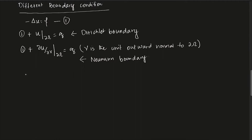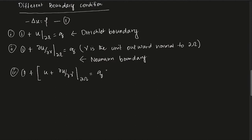There are other boundary conditions also. For example, if you specify u plus del u / del gamma restricted to del omega equals g, this sort of boundary condition is called a mixed boundary condition.